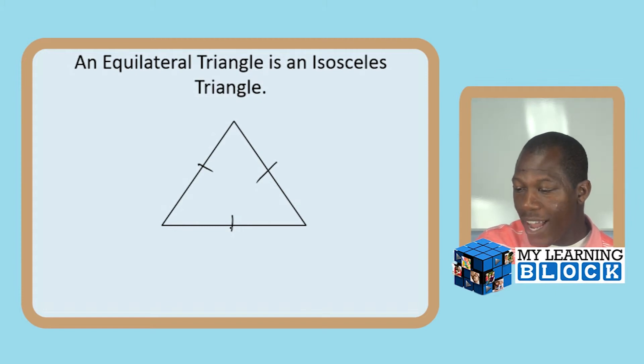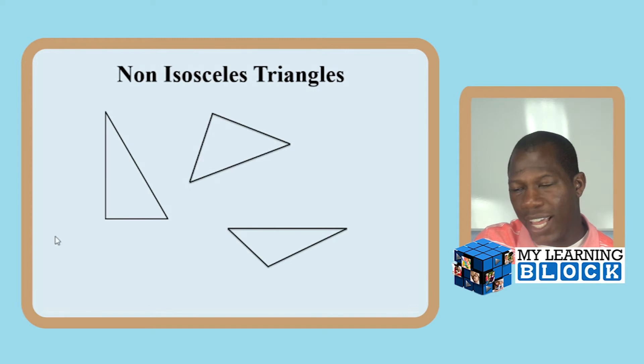So what are non-examples of isosceles triangles? I'm glad you asked. These three triangles are not examples of isosceles triangles for the obvious reason, right? They don't have two sides that are equal. Here we have this side, this side, and this side are all three different sizes. Therefore, not isosceles.